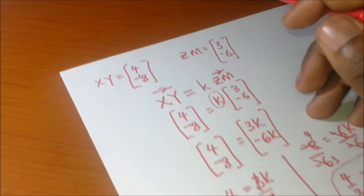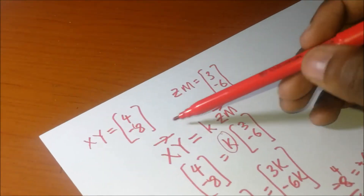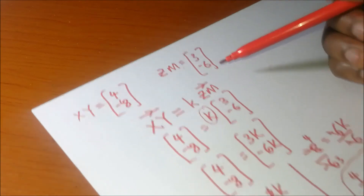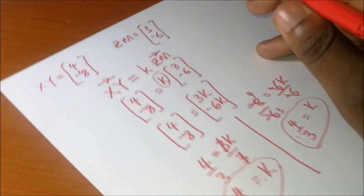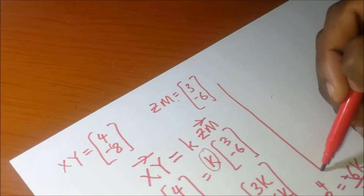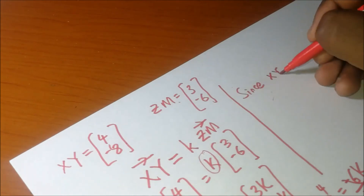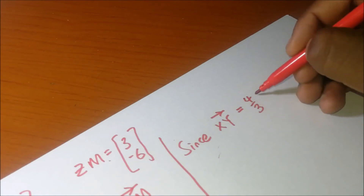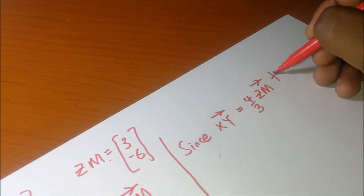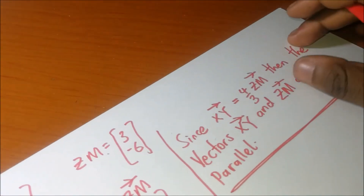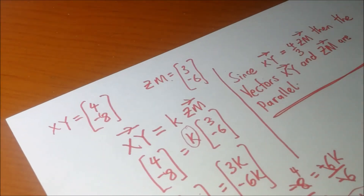Since the values of K are the same, we have a uniform value of K. If the values of K were not the same, it would mean the two vectors are not parallel and we would conclude they are not parallel. But since we get the same value of K on both sides, the condition is perfectly met. We conclude that XY = (4/3) ZM, and that is how we prove that vectors are parallel.